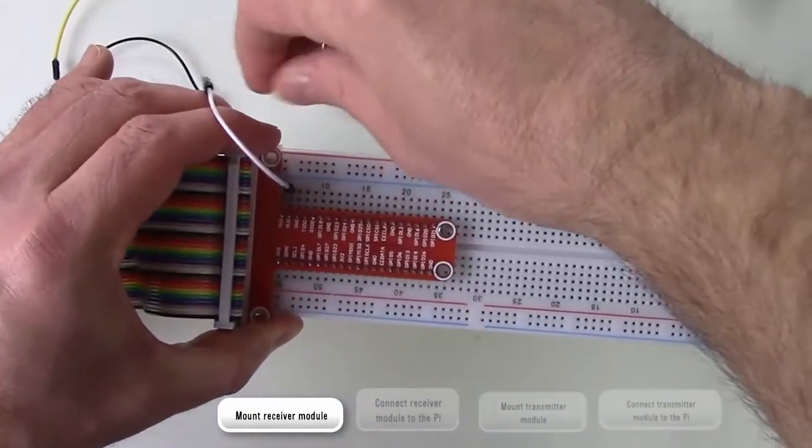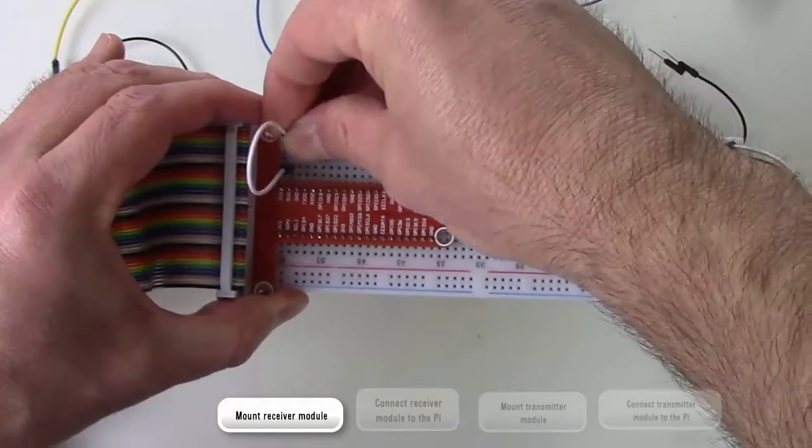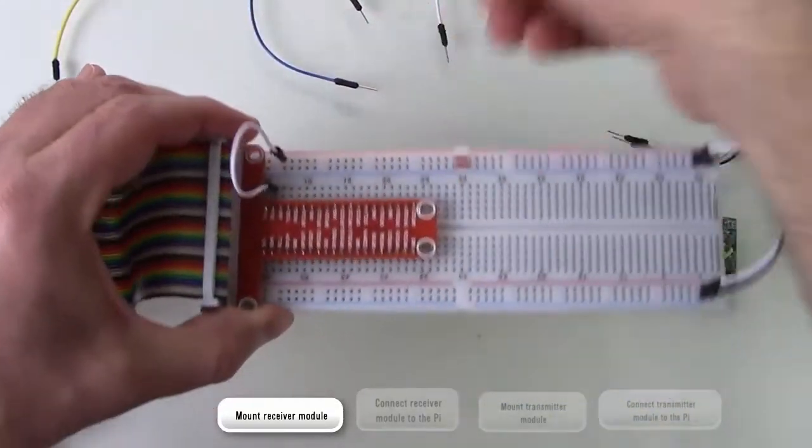Connect the plus 5 volt GPIO pin from the Pi to the positive rail. Then connect the GPIO ground pin to the negative rail.